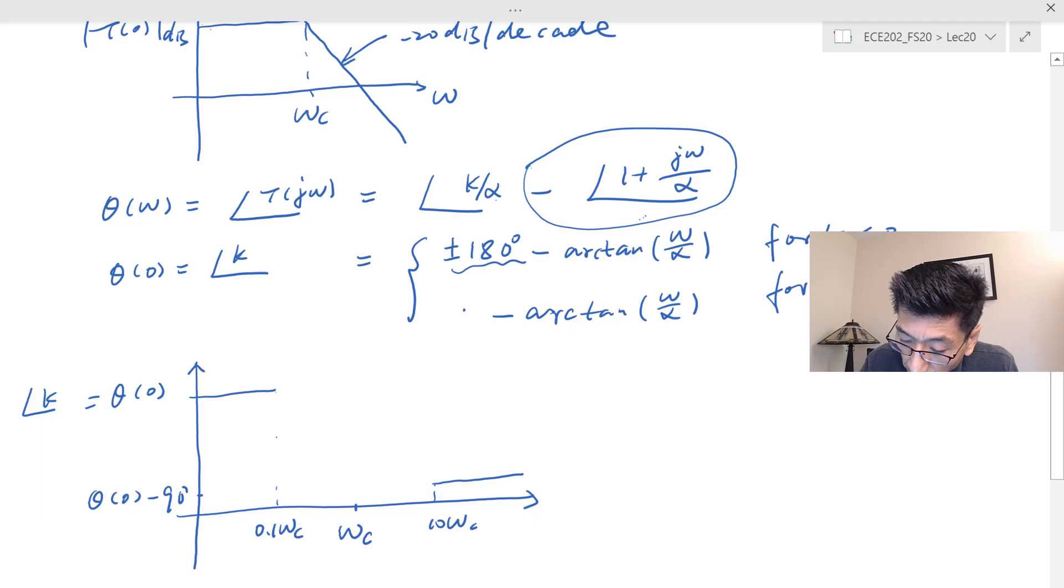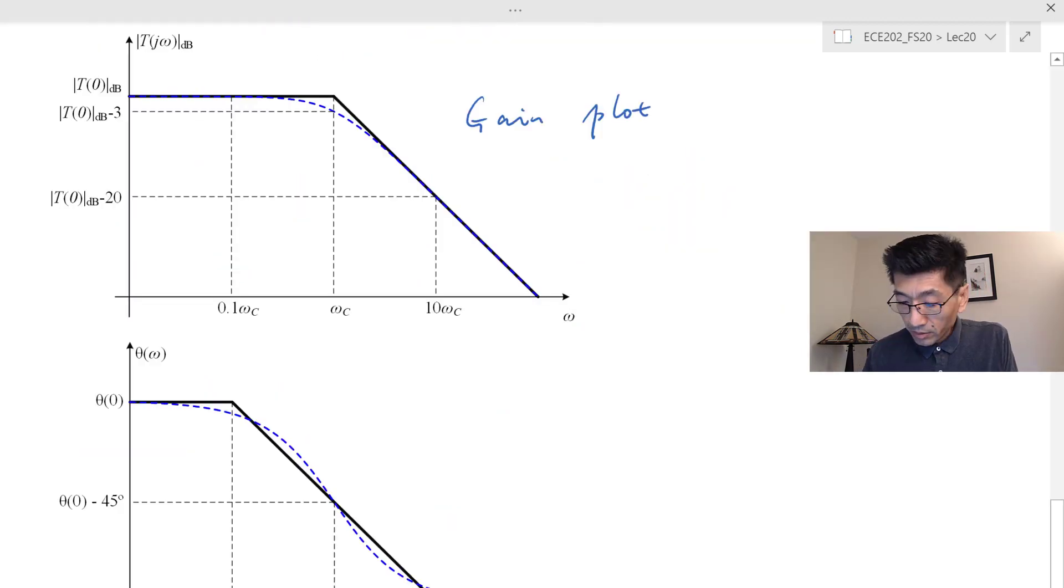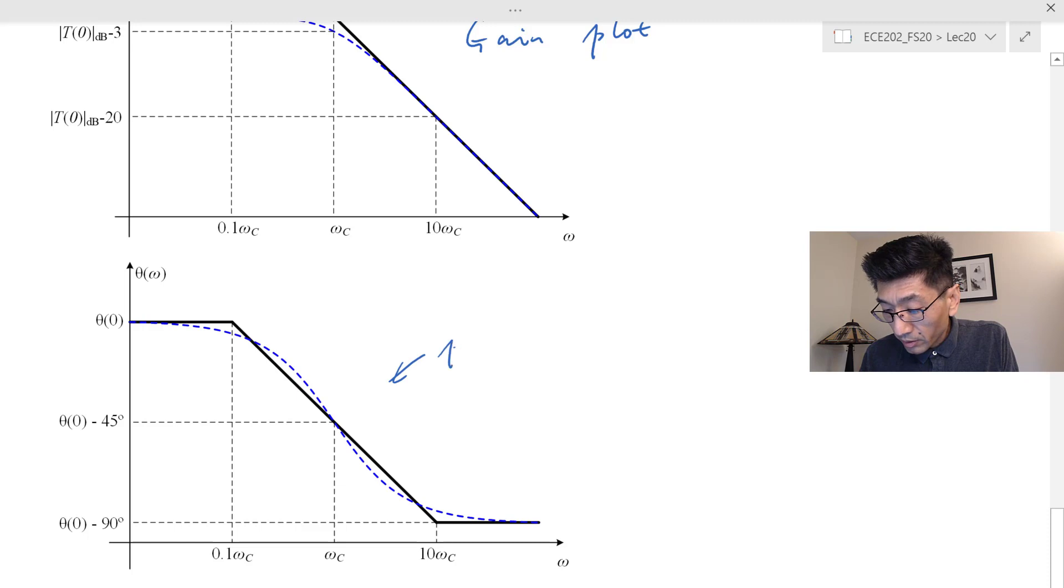We're going to draw a straight line that has a slope of negative 45 degrees per decade. In the middle, that should be θ(0) minus 45 degrees, and it depends on whether k is positive or negative. If k is positive, then θ(0) is zero. This is the phase plot. The black lines are the approximations, with negative 45 degrees per decade.